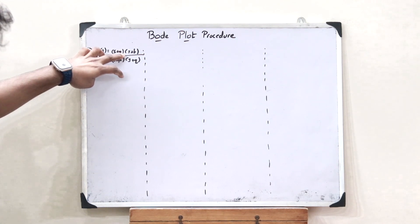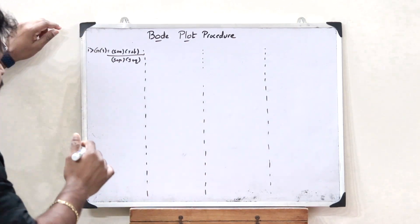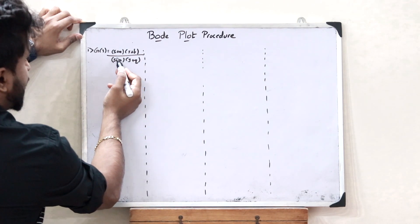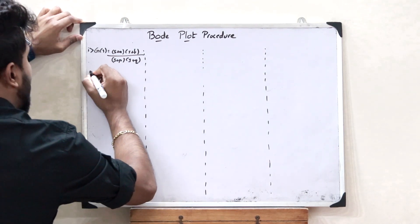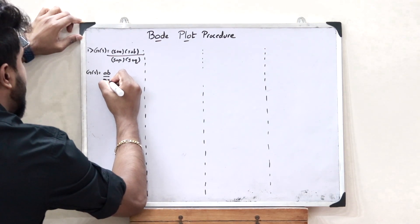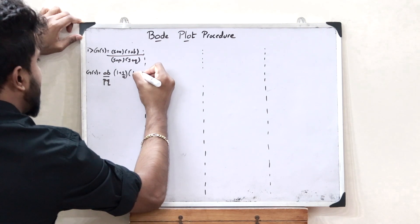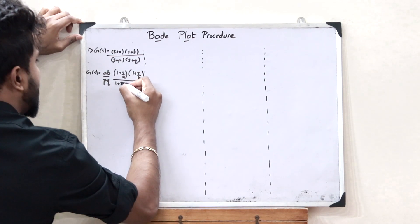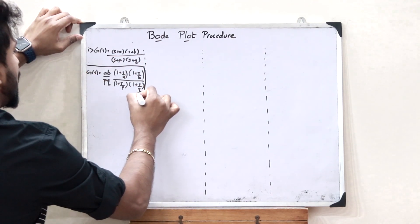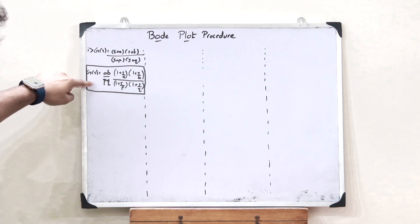A standard form is a form in which we have (1 + S/A)(1 + S/B) and so on. In order to convert it to a standard form, we take A common outside, B common outside, P common outside, and Q common outside. Once we do that, we have G(S) = (AB/PQ) × [(1 + S/A)(1 + S/B)] / [(1 + S/P)(1 + S/Q)]. This is the standard form, and converting the transfer function into it is the basic first step while plotting a Bode plot.